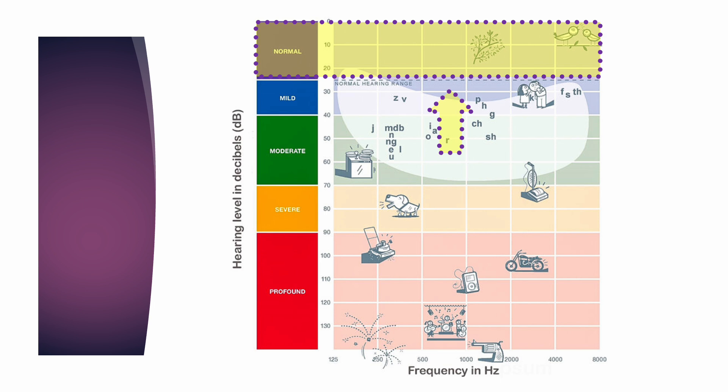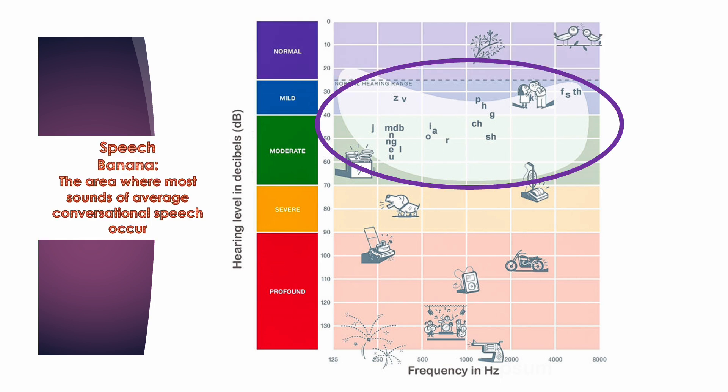The sections below 20 decibels are divided into different categories of hearing loss: mild, moderate, moderately severe, severe, and profound. These sections give audiologists a way to describe the configuration of a person's hearing loss. This circled section is fondly referred to as the speech banana — the area where most sounds of average conversational speech occur. Vowels typically provide volume, and consonants provide clarity.